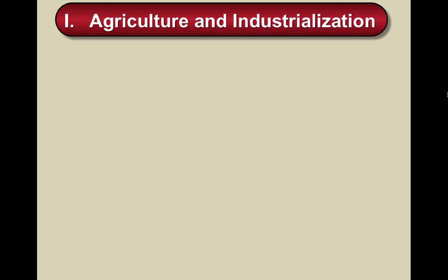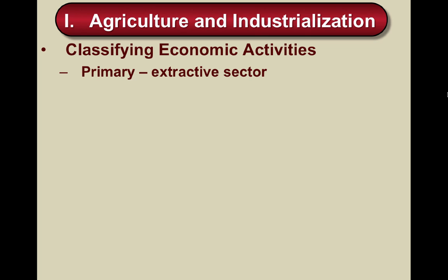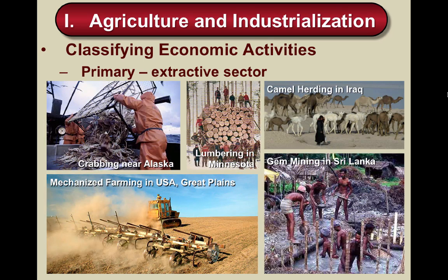We're going to look at classifying economic activities, beginning with primary activities, also known as the extractive sector. In any society, people are involved in different areas of the economy. Primary activities involve the extraction of natural resources — things such as herding, fishing, mining, farming, lumbering, and so on. They're known as primary activities because that is what people were involved in for most of human history.